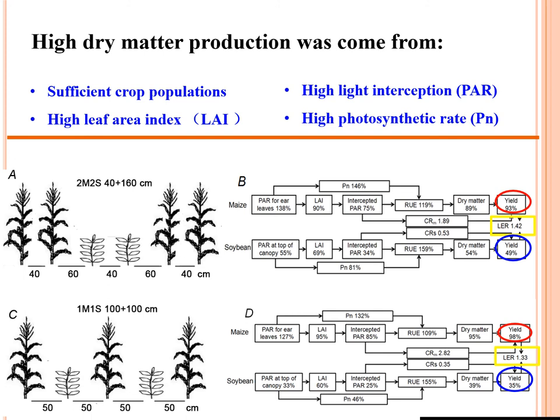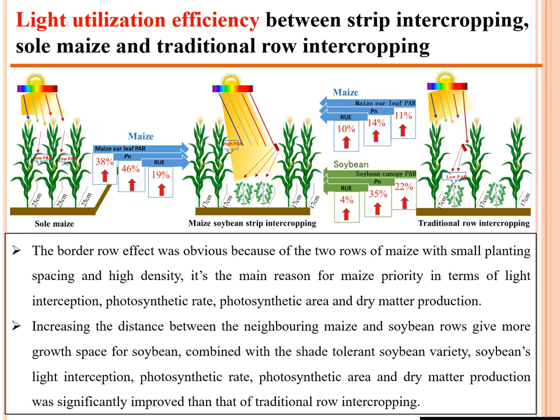Higher dry matter production results from sufficient crop population, high leaf area index, high light interception, and high photosynthetic rate. The border row effect is obvious because of the two rows of maize with small planting spacing and high density, which is the main reason for maize's advantage in light interception and photosynthetic area. Increasing the distance between neighboring maize and soybean rows gives more growth space for soybean, and combined with shade-tolerant soybean varieties, soybean's light interception, photosynthetic area, photosynthetic rate, and dry matter production were significantly improved over traditional row intercropping.